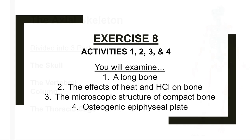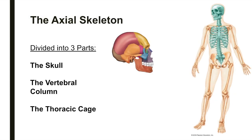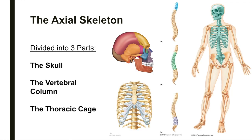The axial skeleton can be divided into three parts: the skull, the vertebral column, and the thoracic cage. This division of the skeleton forms the longitudinal axis of the body and protects the brain, spinal cord, heart, and lungs.